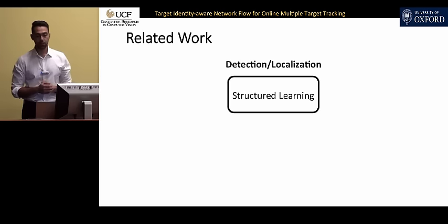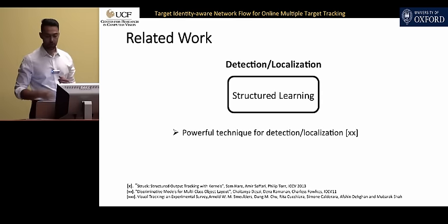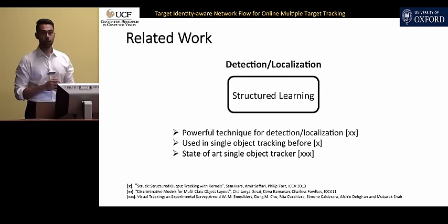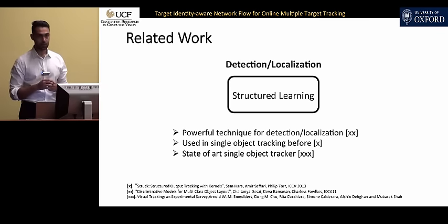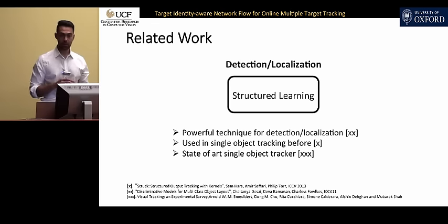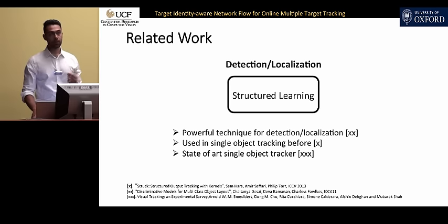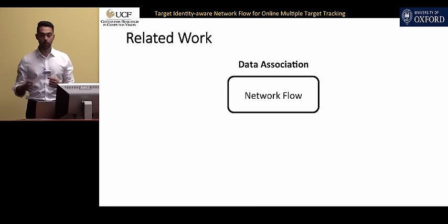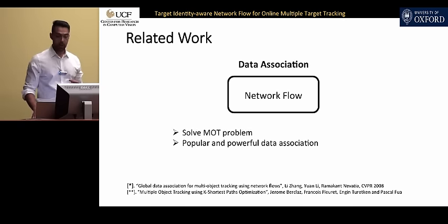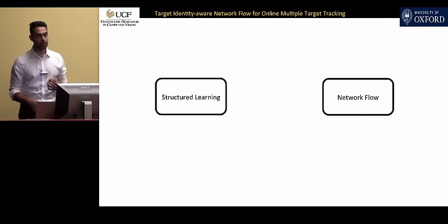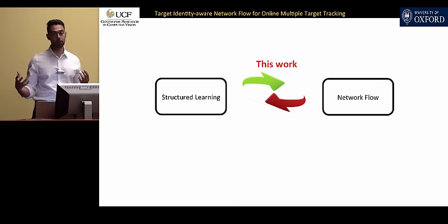Looking back at the literature, structural learning has been a very powerful and popular method for detection and localization. It has also been used for single object tracking, and in one of our recent surveys published in IEEE PAMI, we showed it is a state-of-the-art tracker compared to 18 other trackers. However, its extension to multiple object tracking has been relatively unexplored. On the other hand, network flow is a very popular choice for data association due to its fast inference.